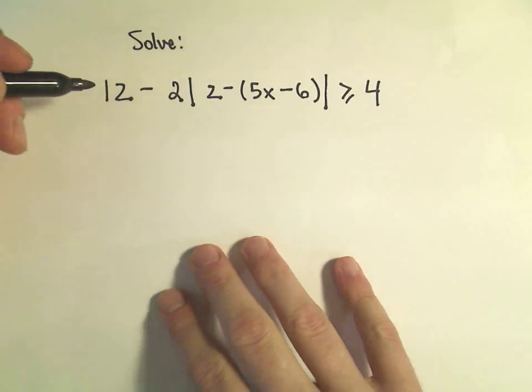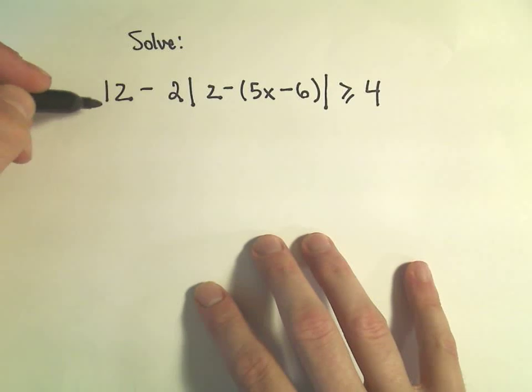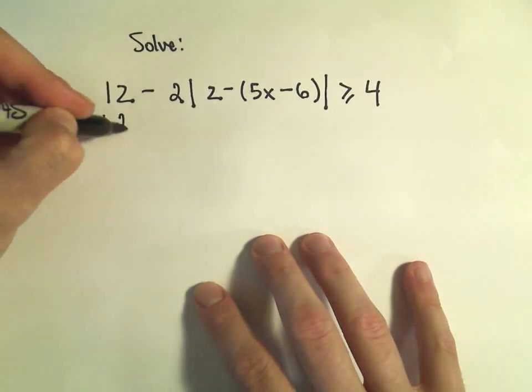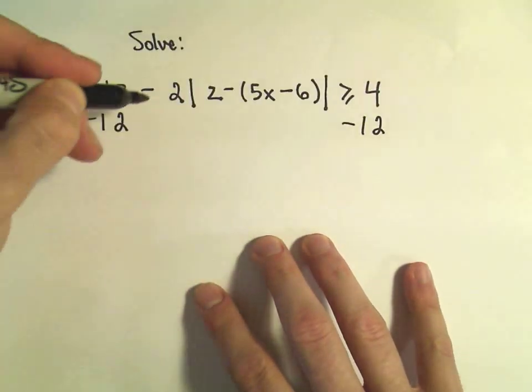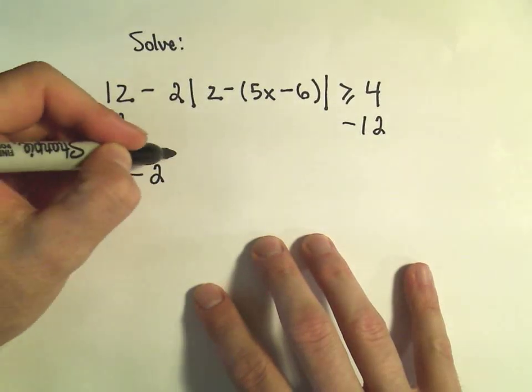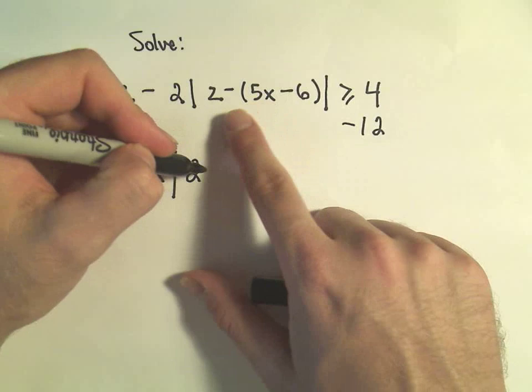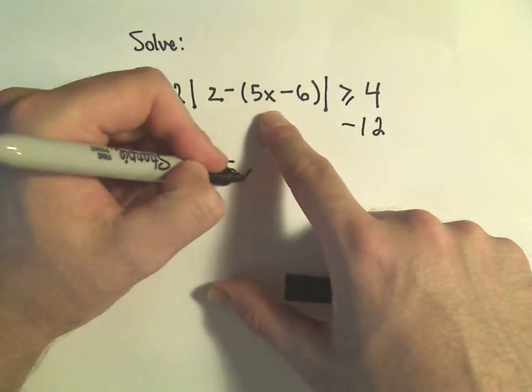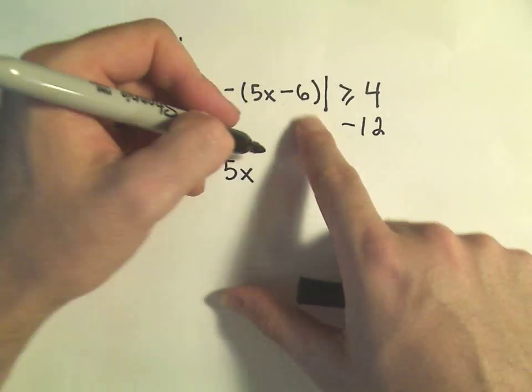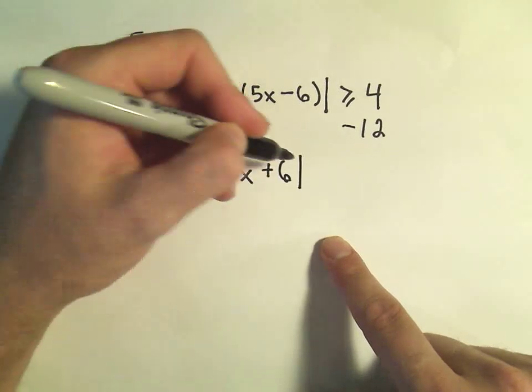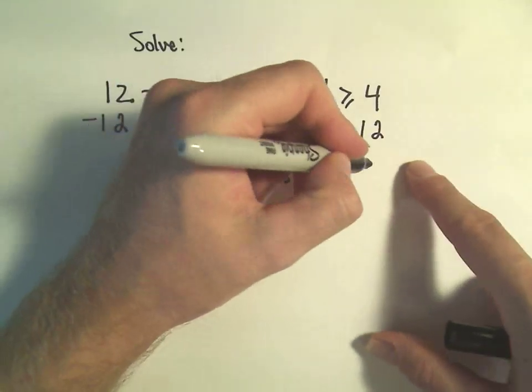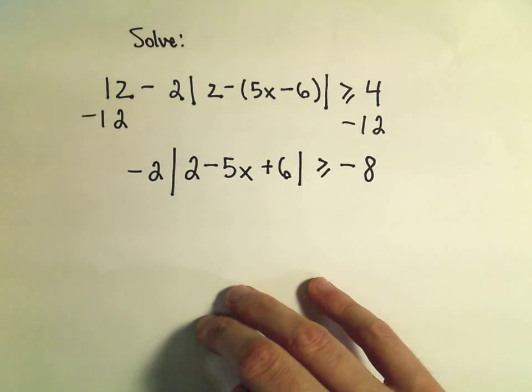Yuck. So the first thing, again, I typically try to get the absolute value by itself. I'm going to subtract 12 from both sides. So that's going to leave me with negative 2 and then absolute value. Inside the absolute value, I'm going to distribute the negative. So I would have negative 5x, and then a negative and a negative would make positive 6. If I do 4 minus 12, that's going to give me negative 8 on the right side.